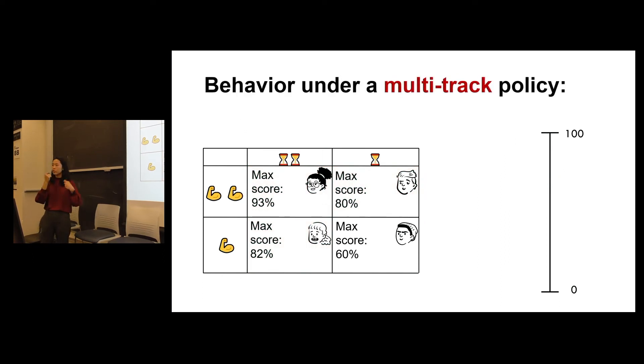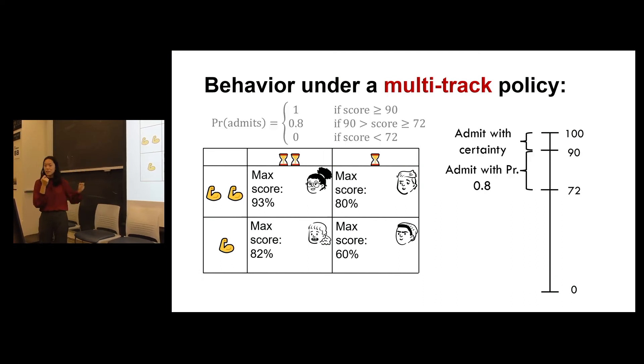Now, in our work, we propose a solution. And in this case, it translates to a multi-track admissions policy. So what do I mean by that? This is exactly what I mean by that. It's an allocation curve. But we can also see it on the scale. What it means is that if a student scores between 90 and 100, we admit them with certainty. But if they score between 72 and 90, then we admit them with probability 0.8.